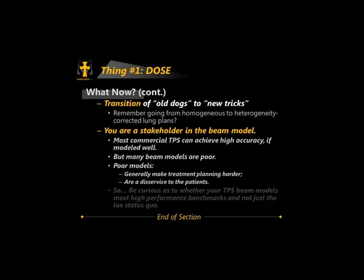You are really a stakeholder in the beam model. Your physicist's beam modeling has a direct effect on your work. There are a lot of pretty poor beam models out there — I do a lot of QA work and when I apply stringent criteria, I see this. Poor models are not rare, they generally make treatment planning harder, and they are a disservice to patients. Be cognizant and encourage your physicists — even if they think their beam model is perfect — to make it as perfect as possible and meet high performance benchmarks, not just the status quo of 3% 3mm which turns out to be very lax.